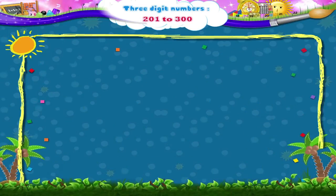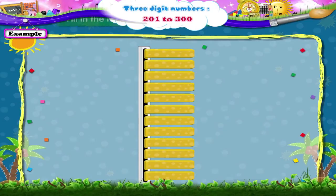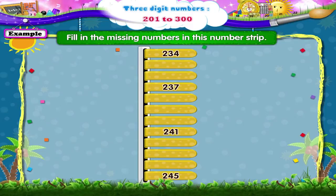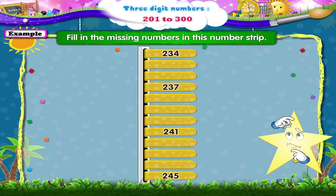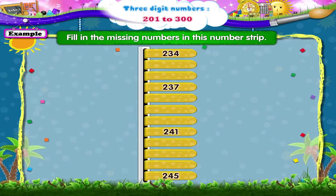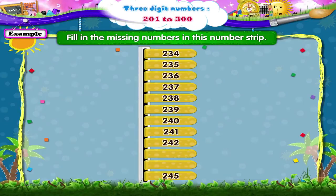It's time to solve some examples now. Fill in the missing numbers in this number strip. Let us first read the numbers given: 234, 237, 241, 245. Can you tell which numbers are missing, Starry? Yes, the missing numbers are 235, 236, 238, 239, 240, 242, 243, and 244.